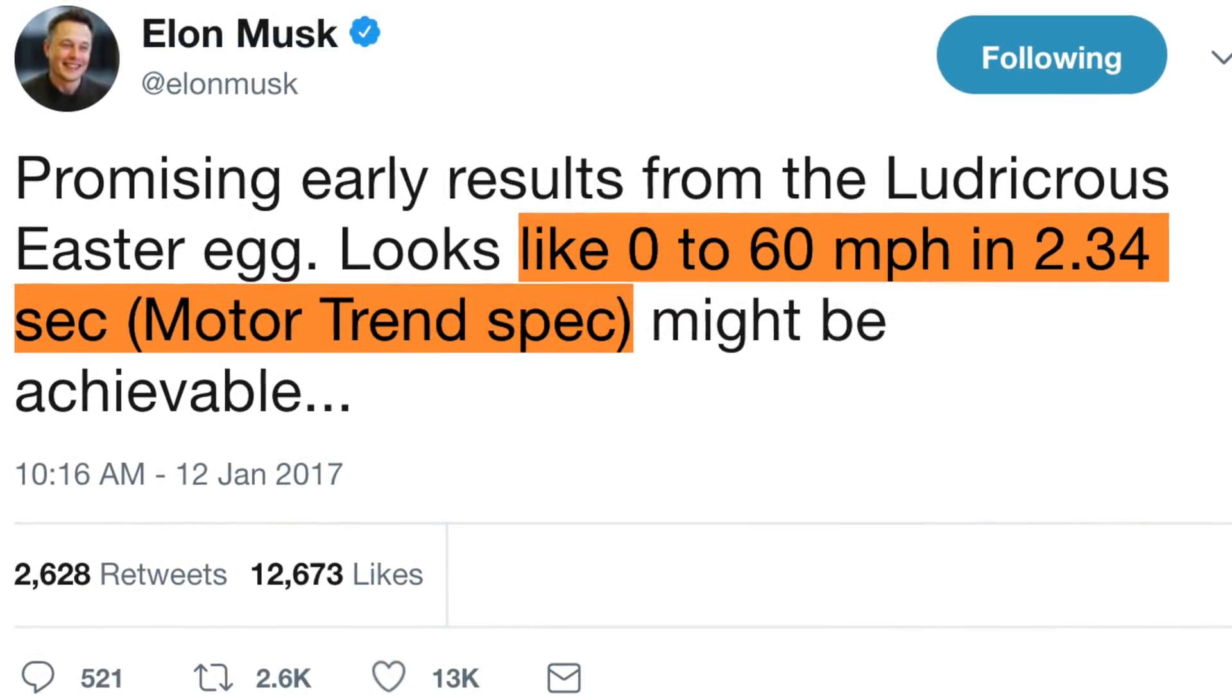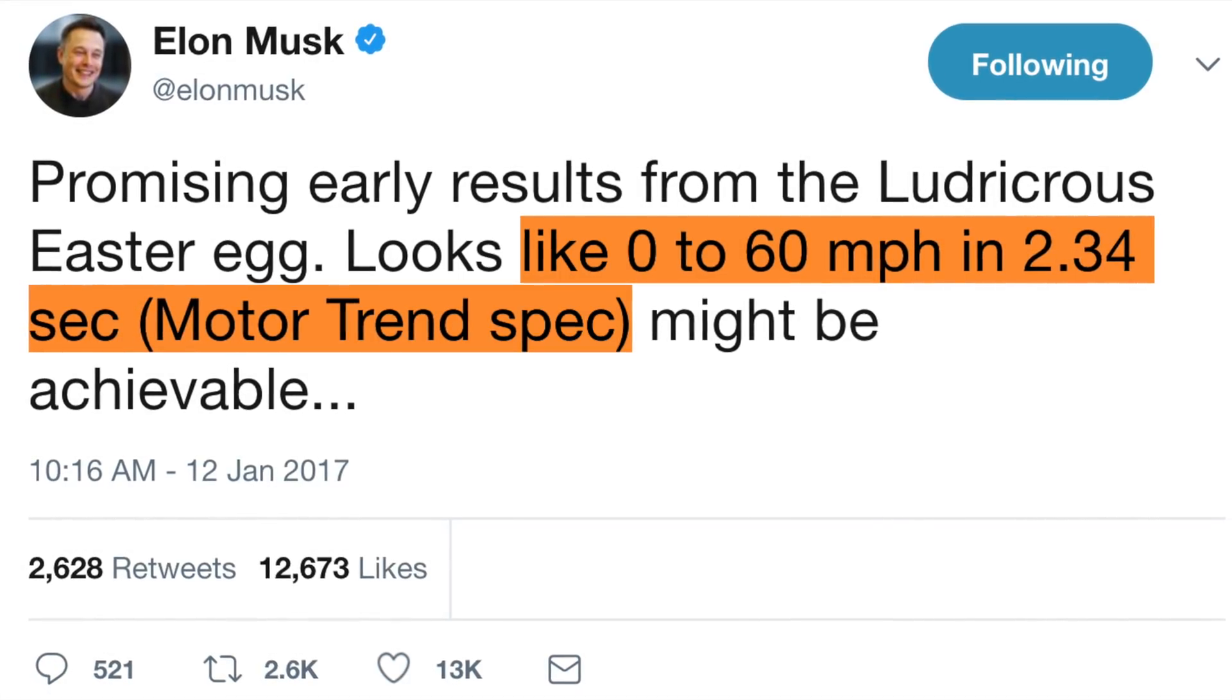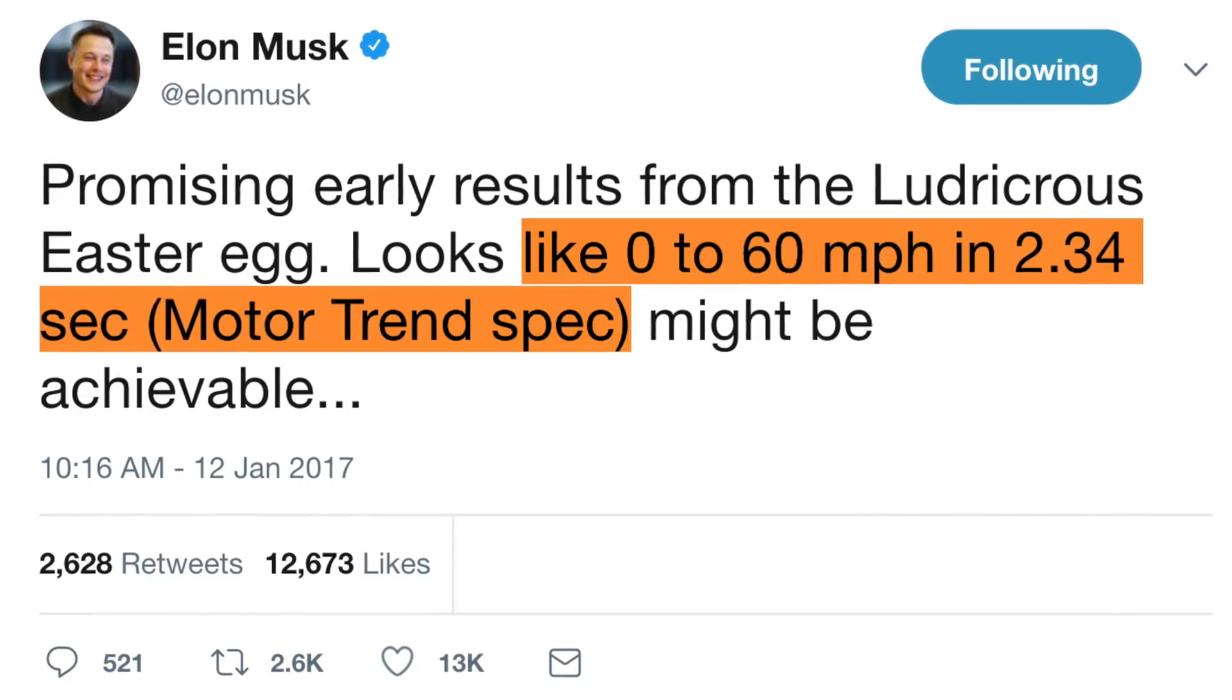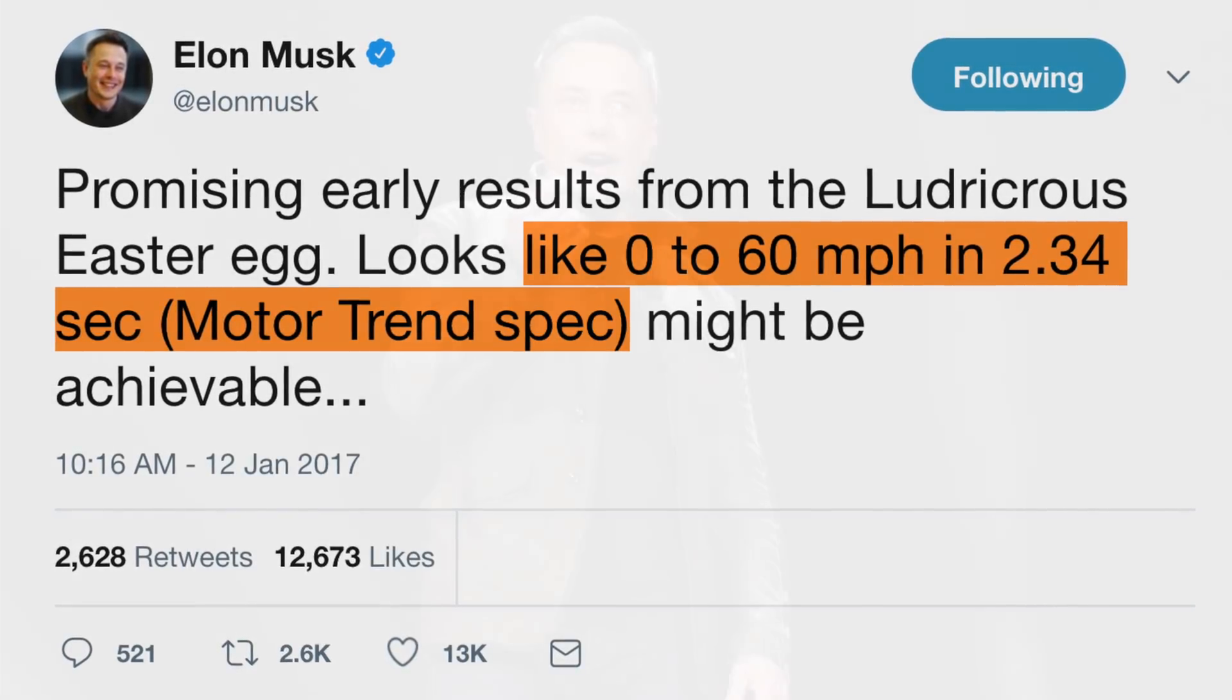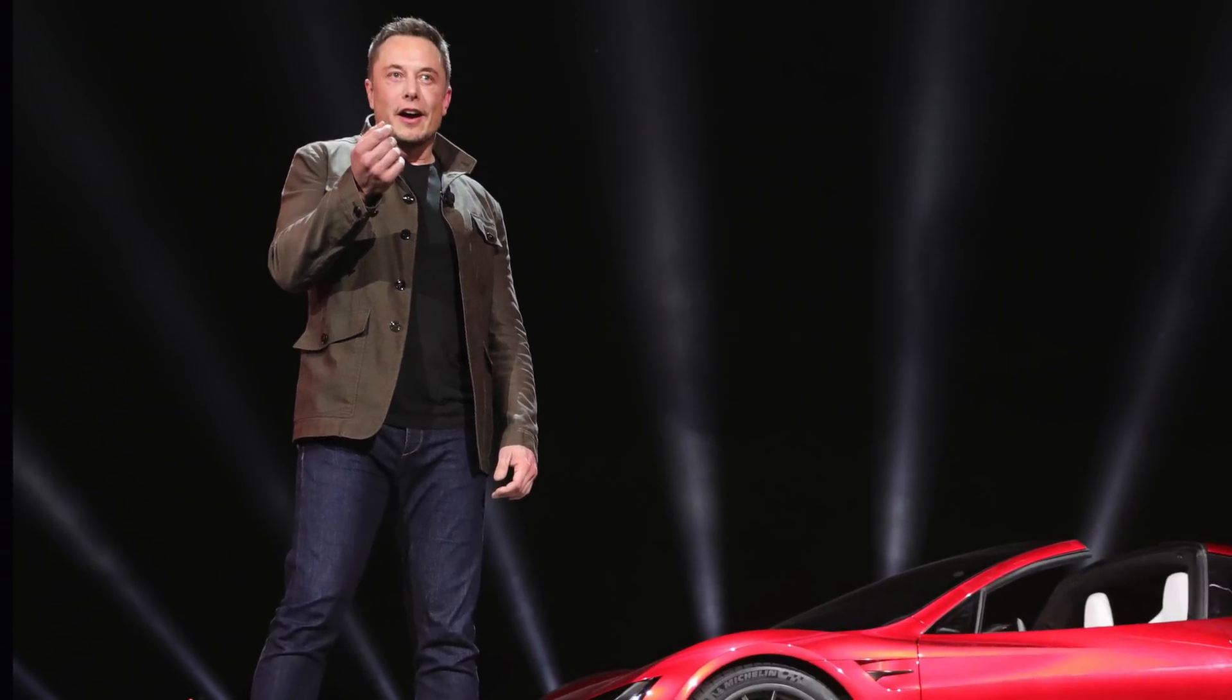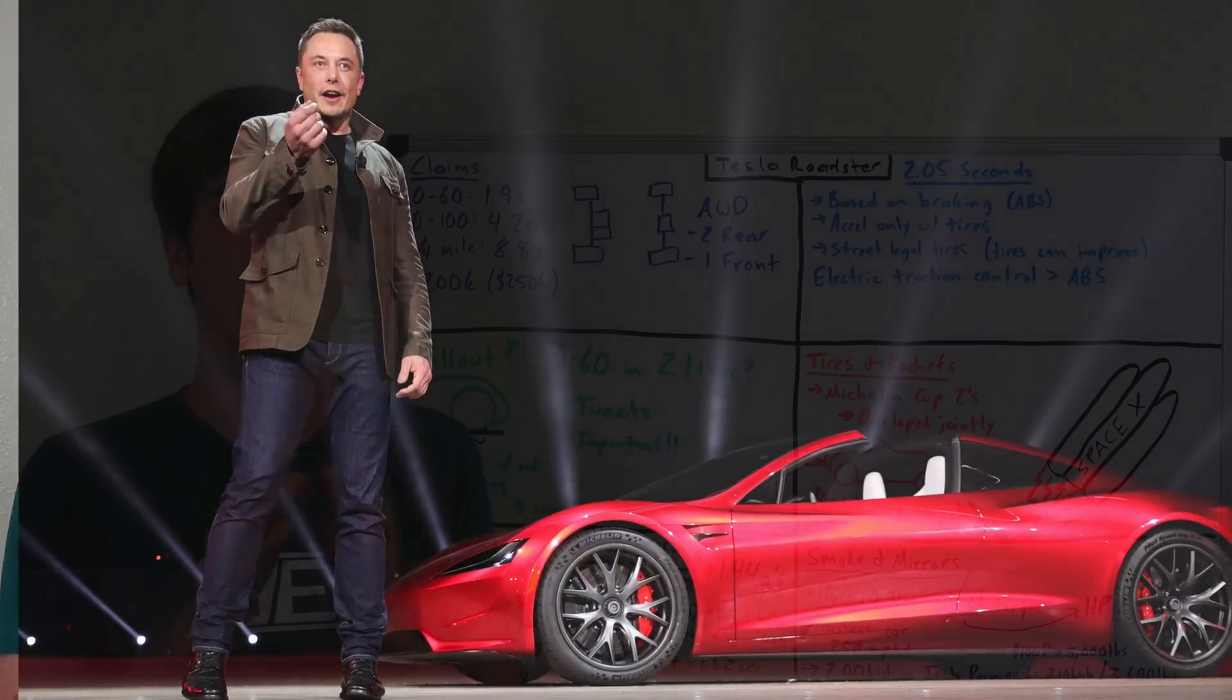However, Elon has tweeted in the past talking about the P100D and saying 0 to 60 in 2.3 seconds, Motor Trend spec, ignoring that first foot of rollout. And so we truly don't know which to believe until they release a statement and say what they mean as far as this 0 to 60 time. For the remainder of this video, we'll just kind of assume that they're going to do that 0 to 60 truly starting from 0 to 60 miles per hour in 1.9 seconds.